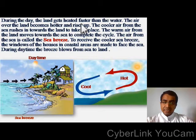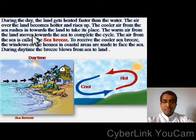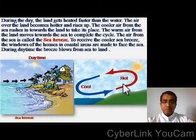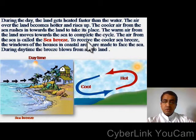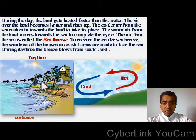During the day, the land gets heated faster than the water, so the air over the land becomes hotter and rises up. The cooler air from the sea rushes in towards the land to take its place, and the warm air from the land moves towards the sea to complete the cycle. To receive the cooler sea breeze, the windows of the houses in coastal areas are made to face the sea. The breeze blows from sea to land, and this is called sea breeze.